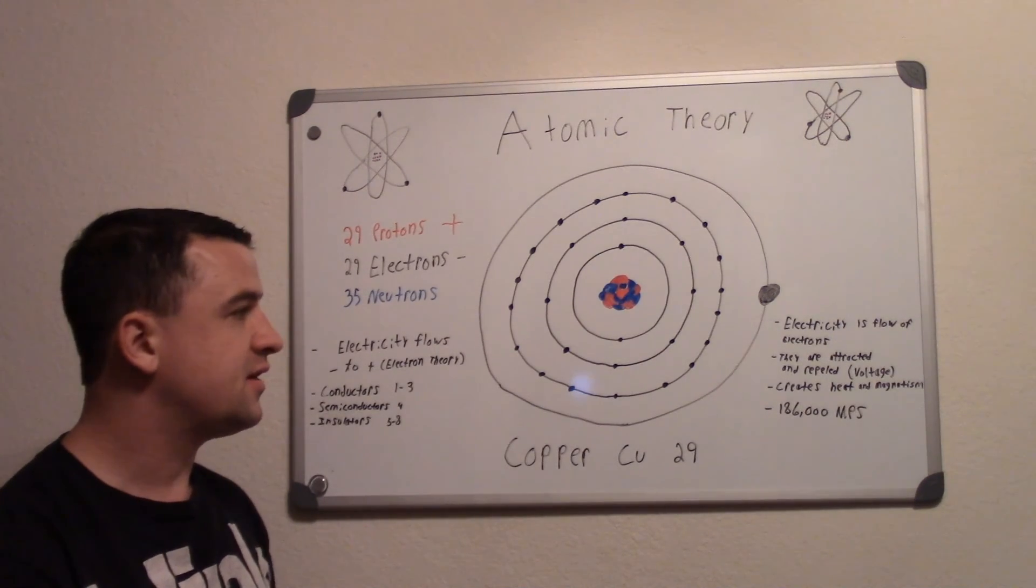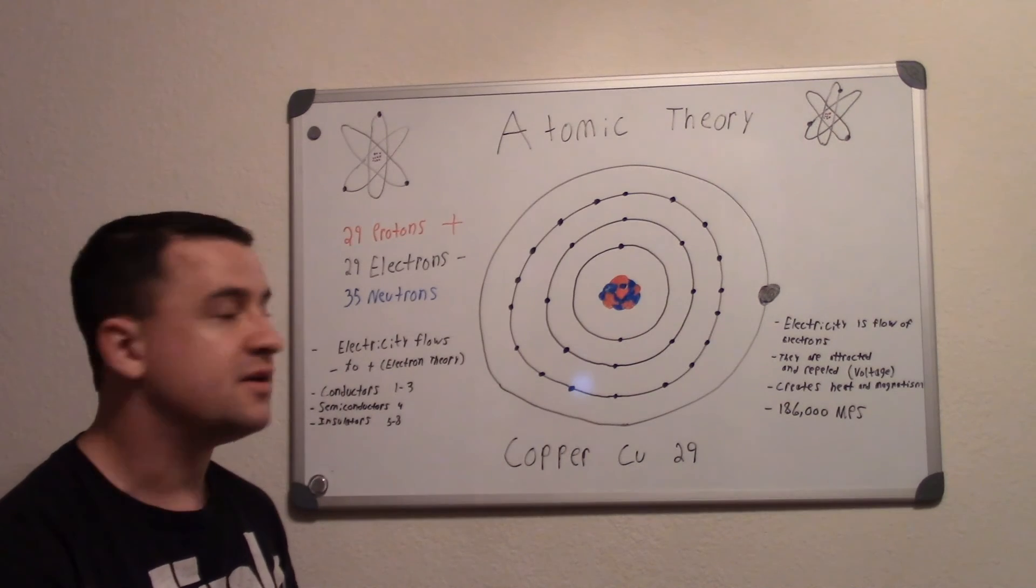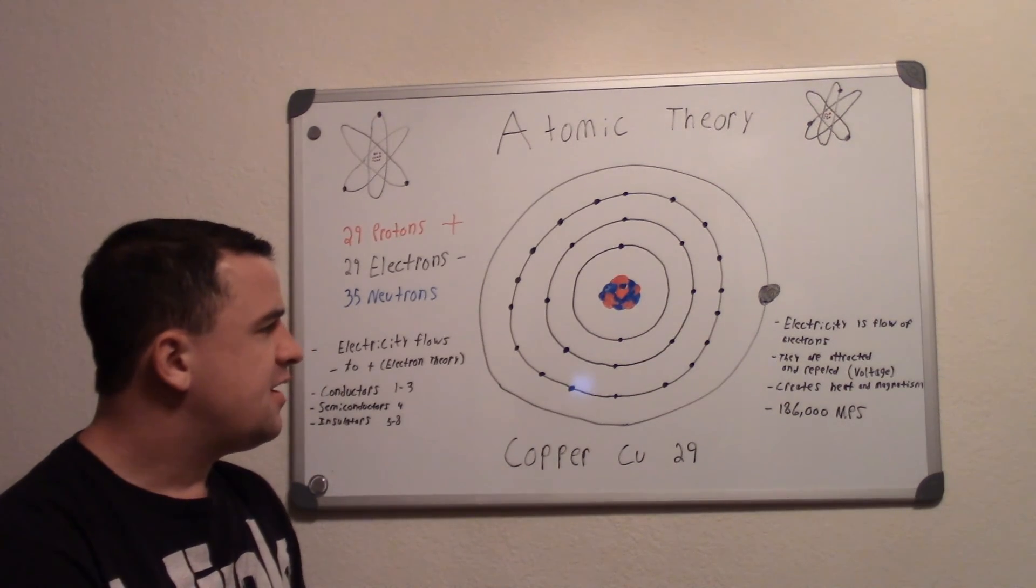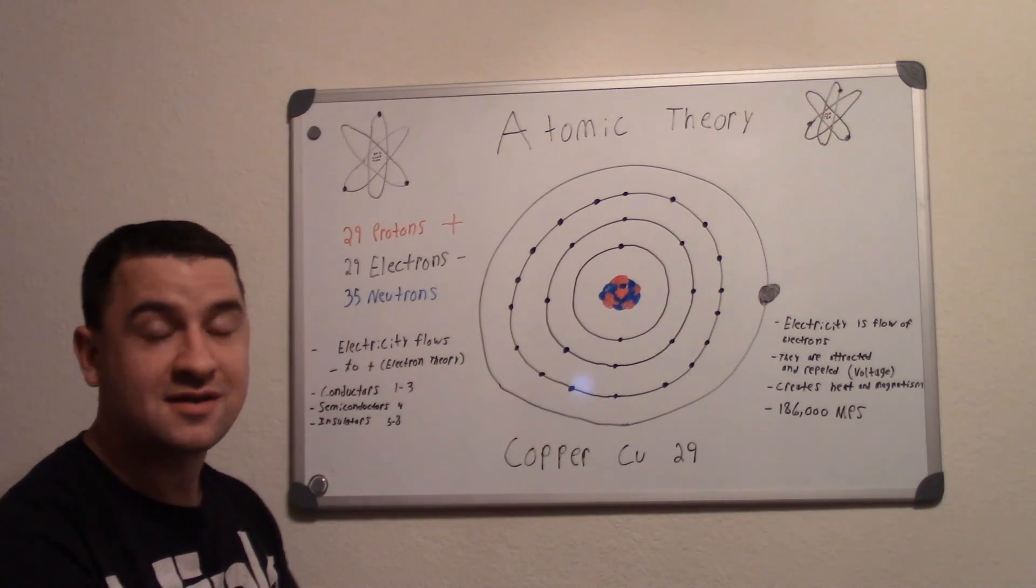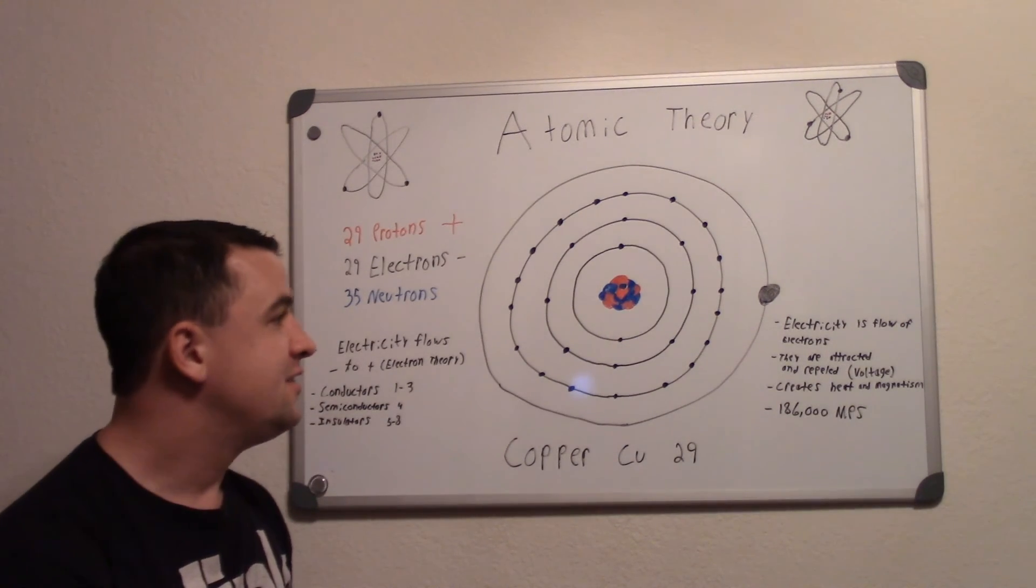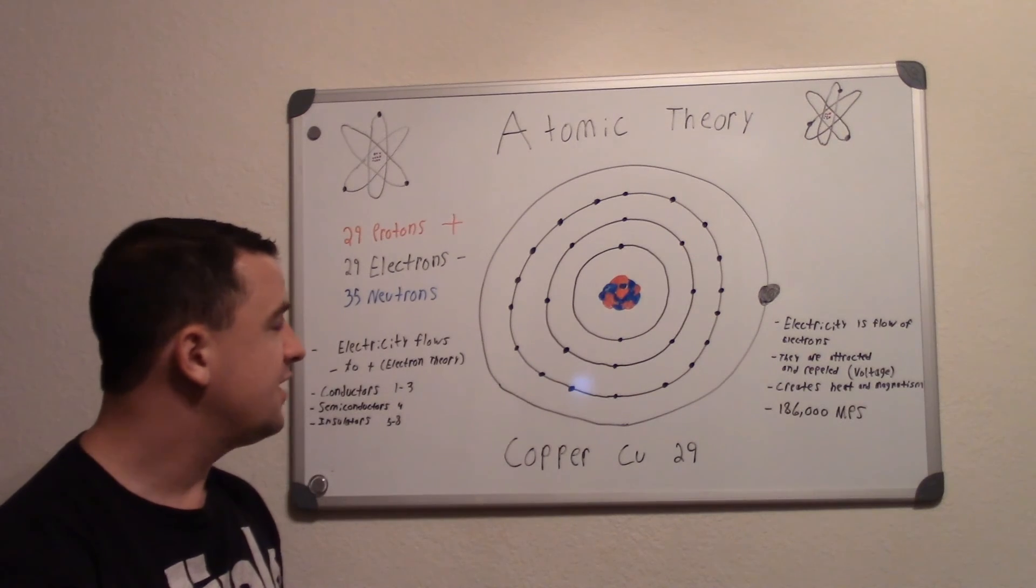That's how you convert electrical energy into mechanical energy. And basically, electricity flows at the speed of light, which is 186,000 miles per second. So it's all happening very fast.